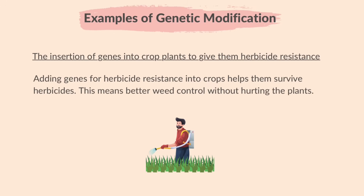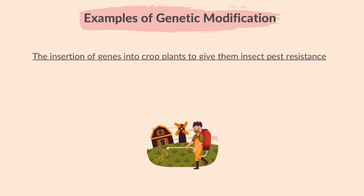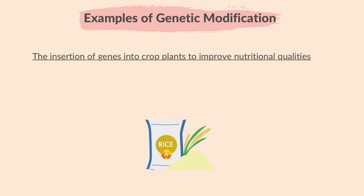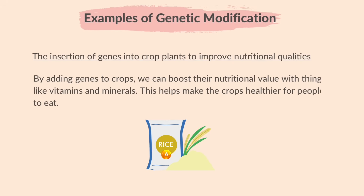Adding genes for herbicide resistance into crops helps them survive herbicides. This means better weed control without hurting the plants. The insertion of genes into crop plants to give them insect pest resistance — adding genes to crops for insect resistance helps plants fight pests without needing lots of chemicals. By adding genes to crops, we can boost their nutritional value with things like vitamins and minerals. This helps make the crops healthier for people to eat.